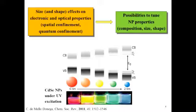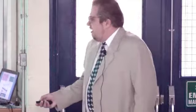Effects of size and shape of nanoparticles on their electronic and optical properties, which is called spatial or quantum confinement, lead to possibilities to tune nanoparticle properties by changing their composition, size, and shape. This is a well-known example of cadmium selenide nanoparticles of different sizes under UV excitation. The smaller the size of the nanoparticle, the larger the HOMO-LUMO gap or band gap, and therefore colors of the solution under UV excitation change as well.